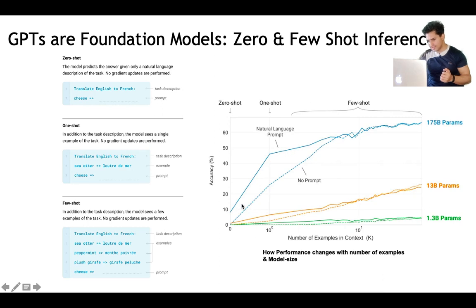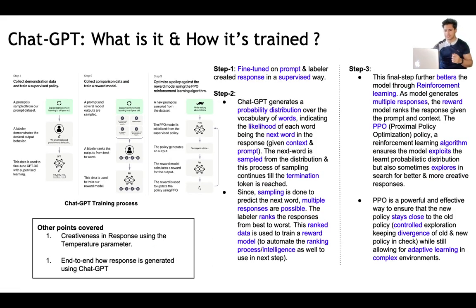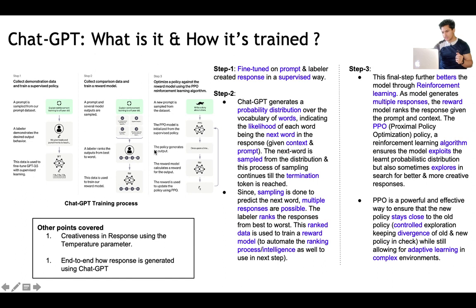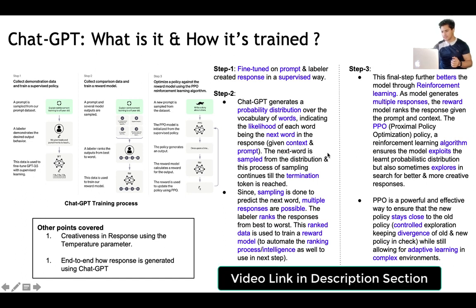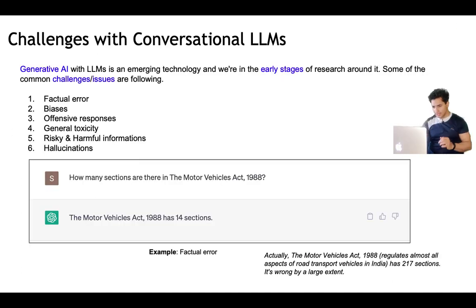This is called zero-shot, or we can give one example (one-shot) or a few examples (few-shot). This is possible because GPT is trained on the entire internet, and as the model becomes bigger, its capability to generalize becomes even better. We also covered the three-step training process: fine-tuning on user prompts and labeler responses, ranking those responses, and then reinforcement learning using PPO (Proximal Policy Optimization) to explore and exploit what the model has learned. We also covered the temperature parameter and the full end-to-end response generation flow.